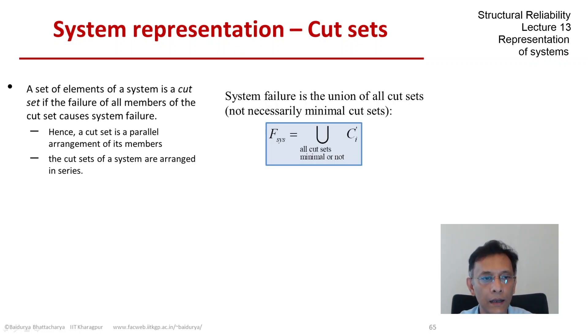Now, a cut set, therefore, is a parallel arrangement of its members and these cut sets are arranged in series. So you see, the system failure event is the union of all the cut sets.